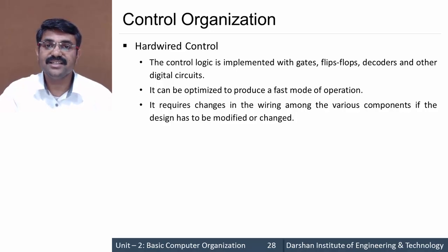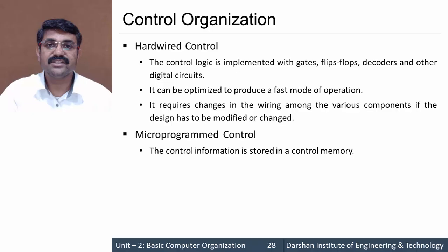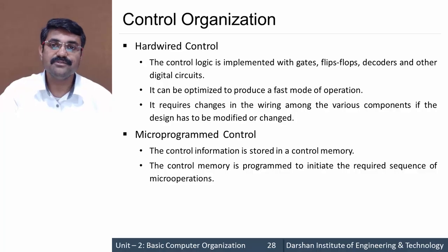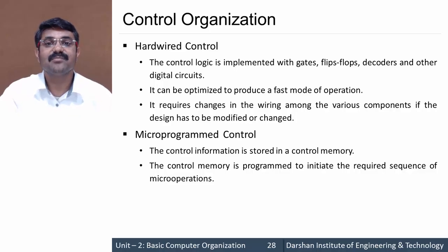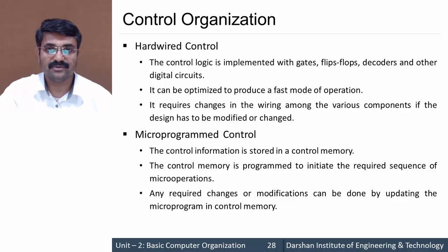The next organization is micro-programmed control. In micro-programmed control, the control information is stored into the control memory. This control memory is a kind of storage wherein all the information for the controlling part is stored, and it is programmed to initiate the required sequence of micro-operations. If we want to make any changes to the micro-operations, we only need to modify the control memory's information, which is easier than changing hardware. So both approaches have their plus and minus points.